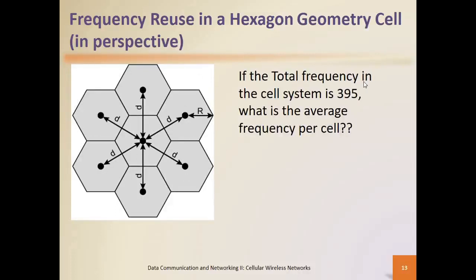For example, if the total frequency in the cell system is 395 and you have seven cells, to get the average frequency per cell you simply divide 395 by seven to get the frequency per cell.